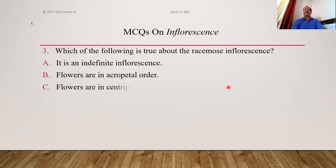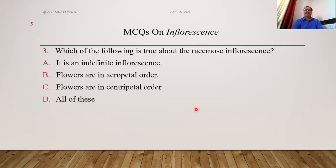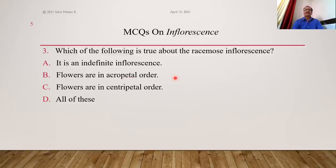Which of the following is true about racimose inflorescence? We studied there are two types: racimose and cymose. Racimose has indefinite growth of the main axis — the rachis keeps increasing in length continuously. The apex of the rachis is never terminated by a flower, so it is free to grow, producing flowers laterally. Flowers produced at the basal region are older, while those at the upper region are younger, and this order is called acropetal succession.